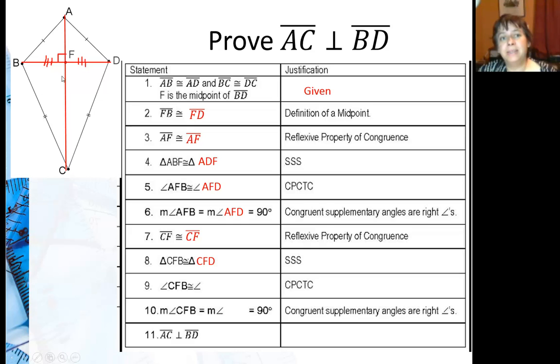Then I can say that CFB, that angle is going to be congruent to CFD by corresponding parts of congruent triangles. So these two angles in here have to be congruent. But they also form a linear pair because this is a line for sure. That means that the two angles must be 90 degrees. Well, since all four angles are 90 degrees and they meet at the same point, they must be perpendicular. So the diagonals of a kite are always perpendicular.